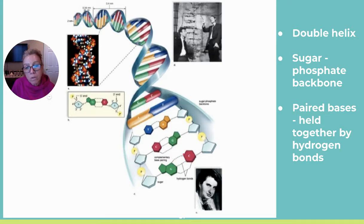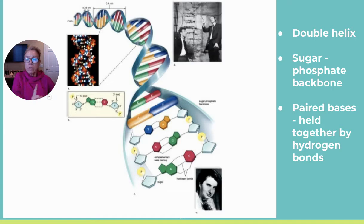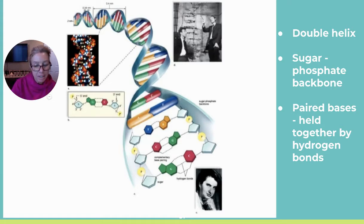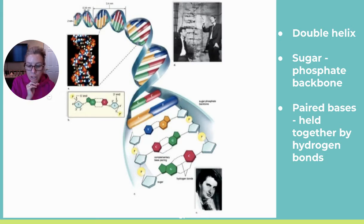The diameter is two nanometers across, with 0.34 nanometers between each rung of the ladder. One complete spiral contains 10 nitrogenous base pairings, making each full turn 3.4 nanometers. Watson and Crick received a Nobel Prize in 1962. The structure is a double helix with a sugar-phosphate backbone, a purine paired with a pyrimidine, adenine with two hydrogen bonds to thymine, and guanine with three hydrogen bonds to cytosine.